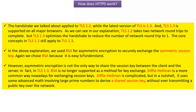In the above explanation, we used RSA for asymmetric encryption to securely exchange the symmetric session key. We chose RSA because it is easy to understand. However, asymmetric encryption is not the only way to share the session key — in fact, in TLS 1.3, RSA is no longer supported as a method for key exchange. Diffie-Hellman is the more common approach nowadays. In a nutshell, Diffie-Hellman uses advanced math involving large prime numbers to derive a shared session key without ever transmitting the key over the network.